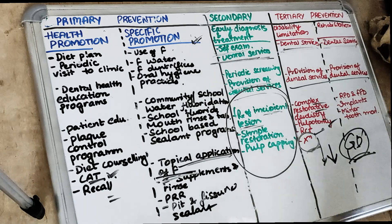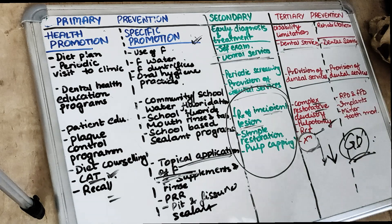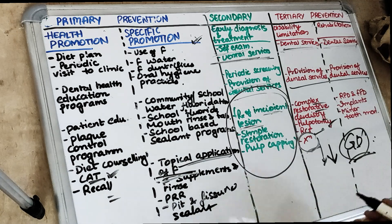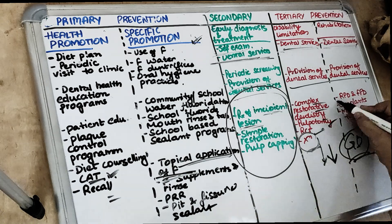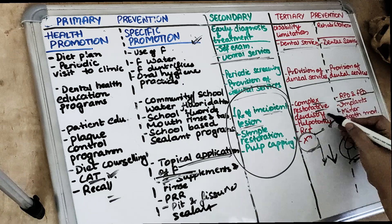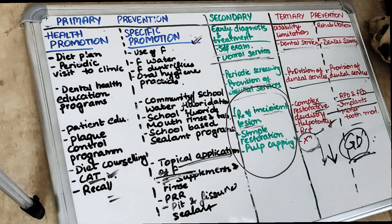Next comes tertiary rehabilitation. Once the tooth is lost because of caries and we have removed it, either we go for an RPD, FPD, implants, or minor tooth movement if required.